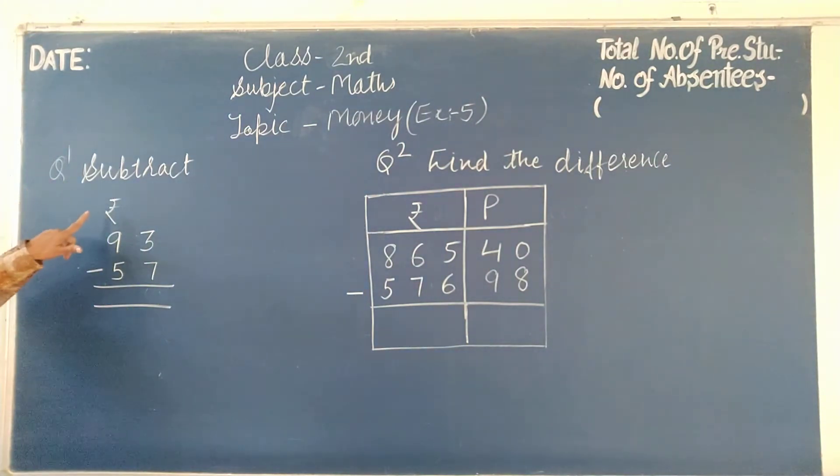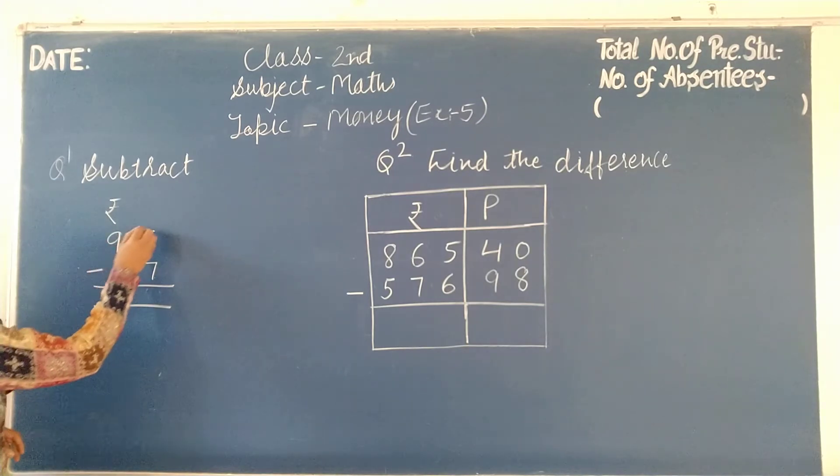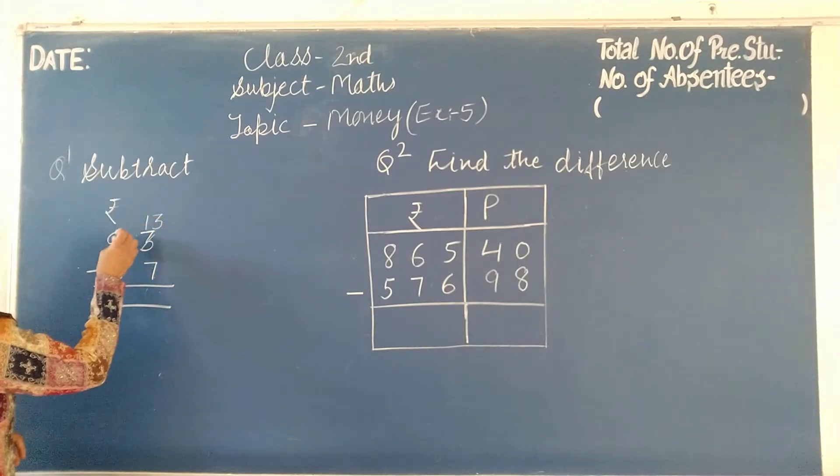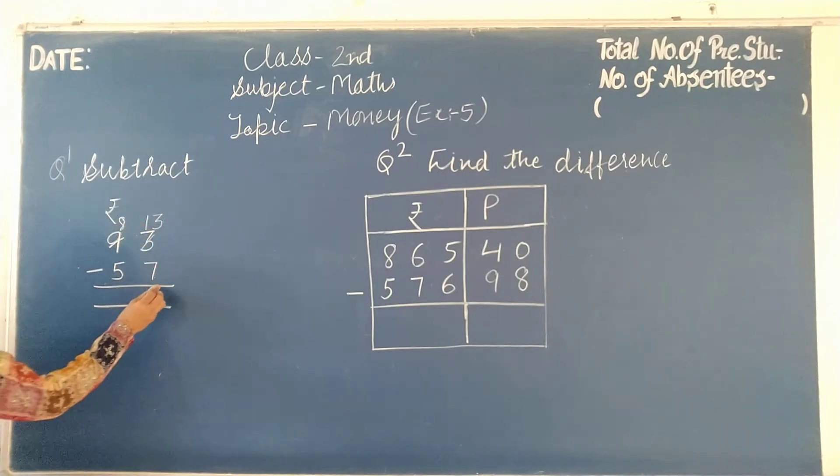Subtract rupees 57 from rupees 93. We cannot subtract 7 from 3, so we borrow. 13 minus 7 is 6, and 8 minus 5 is 3.